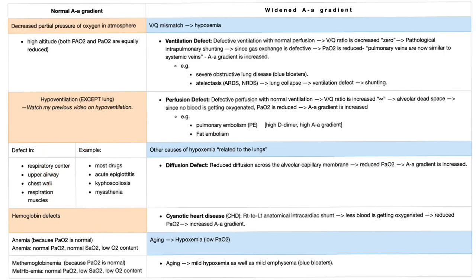I've made another video on ventilation, hypoventilation, and hyperventilation discussing all causes of hypoventilation — all causes except those related to the lung. You could have a problem with the respiratory center in the brain (most drugs do this), upper airway problems like acute epiglottitis, chest wall issues like kyphoscoliosis, respiratory muscles like myasthenia gravis, or hemoglobin defects like anemia and methemoglobinemia.